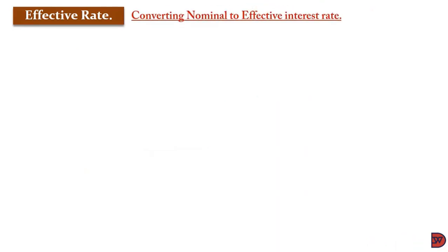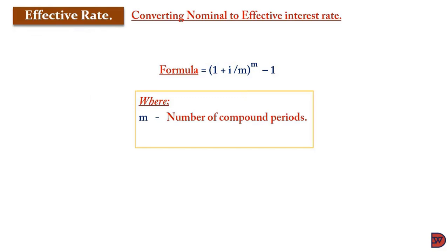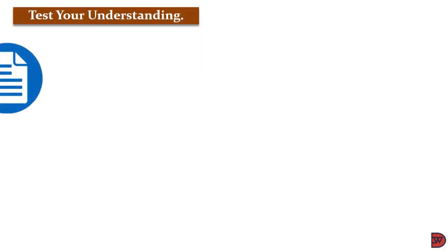Let's learn how to convert nominal to effective interest rate. The formula is: (1 + i/m) raised to the power m, minus 1, where m is the number of compounding periods and i is the interest rate in question.